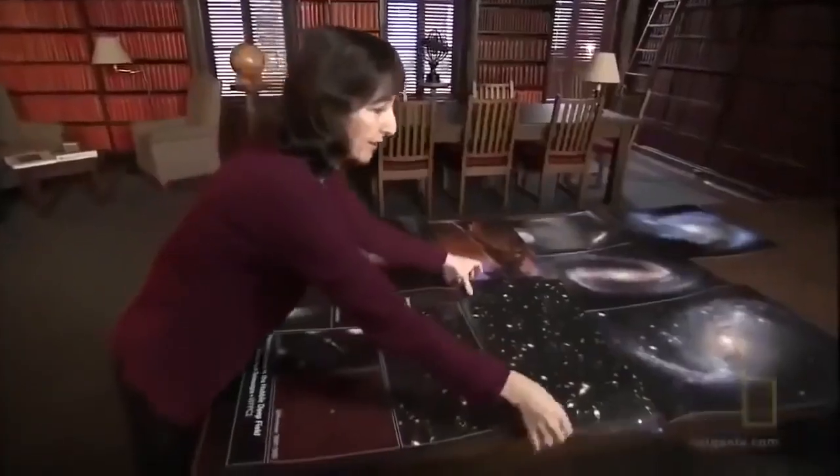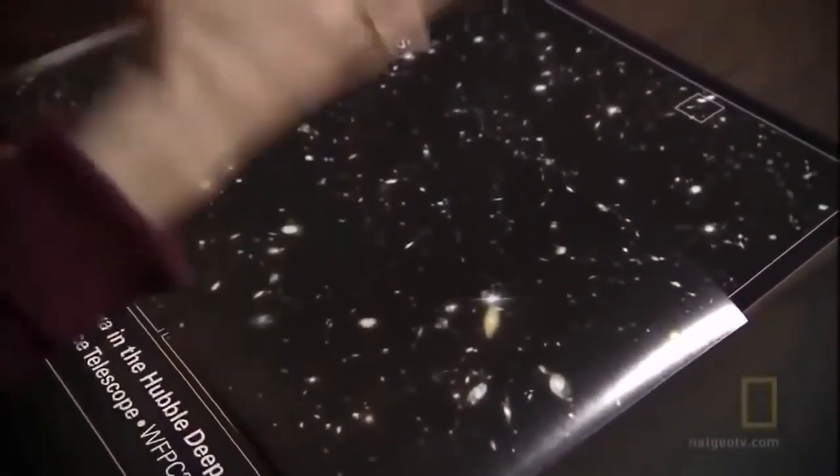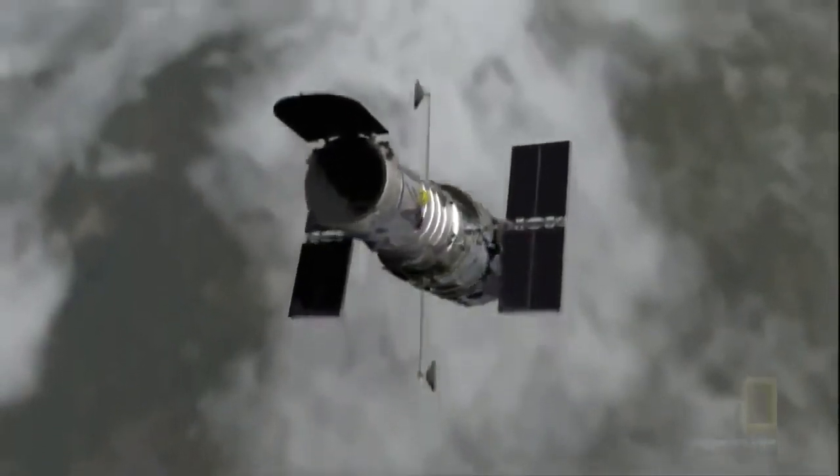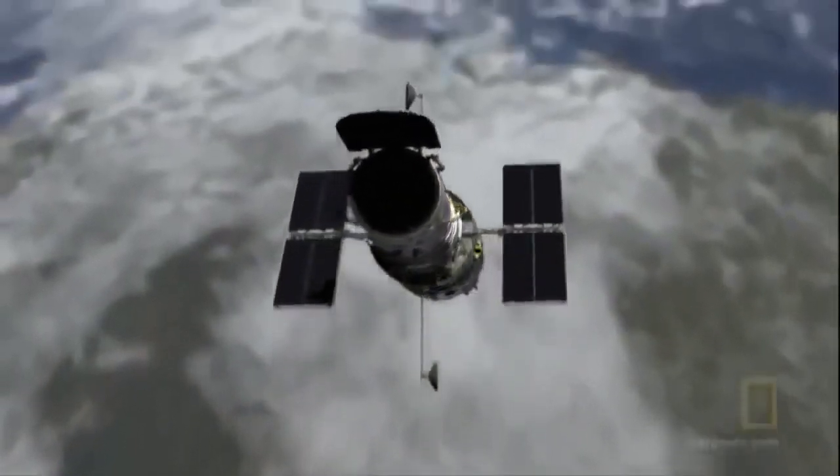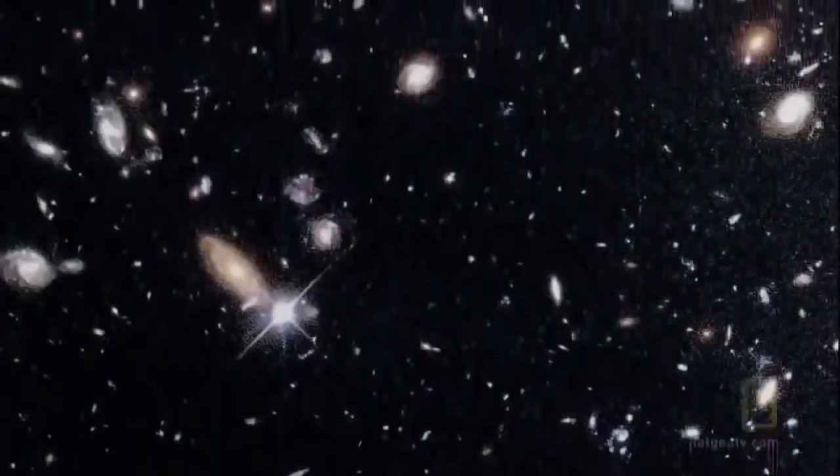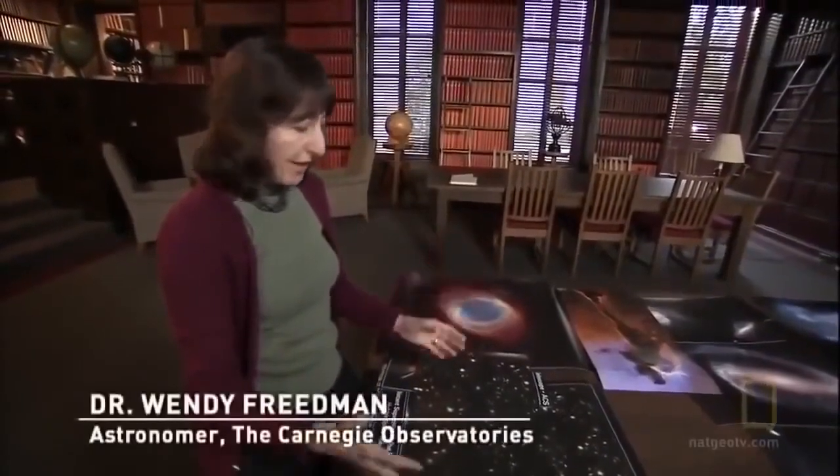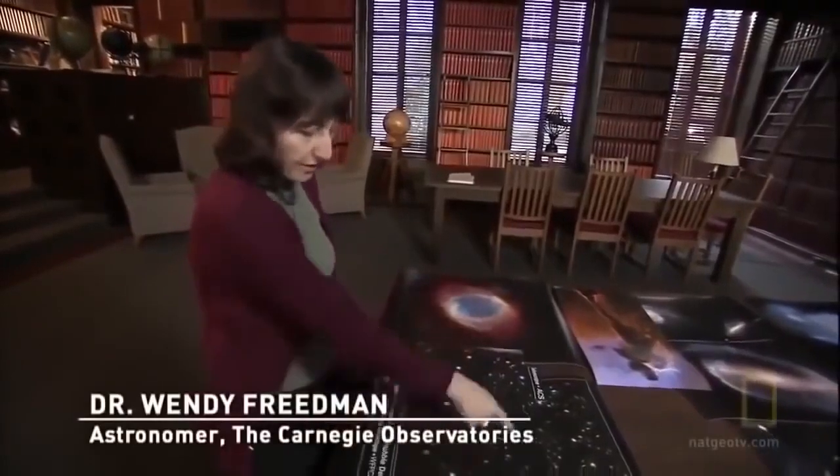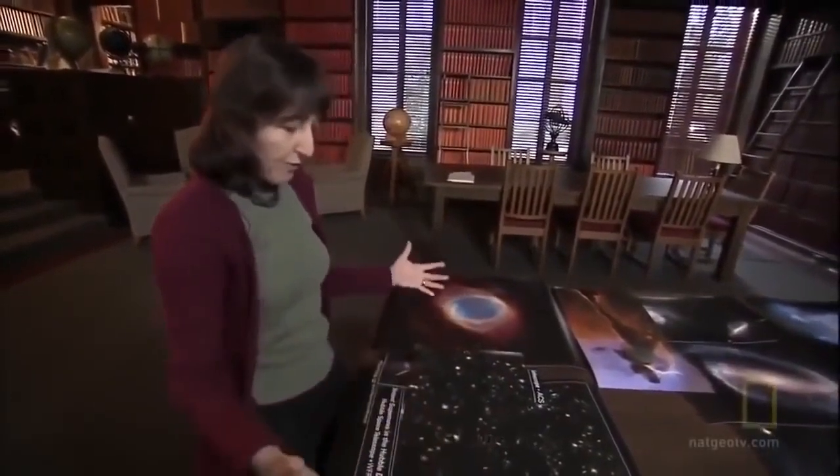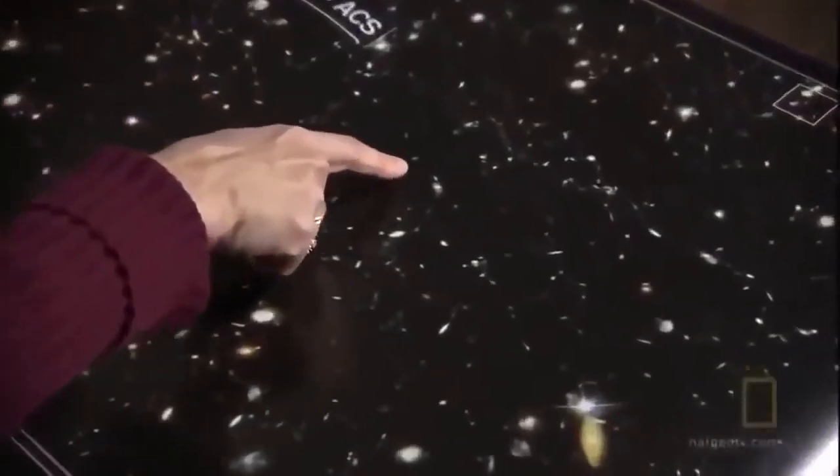Here is an example of a very deep field that was taken by the Hubble Space Telescope. You point the space telescope at a single region in space, and suddenly the first Hubble Deep Field that was ever taken had 4,000 galaxies that were never visible before from the ground. Tremendous power. Each of these smudges, in their own right, is another galaxy. Each one of these galaxies contains about 100 billion stars.